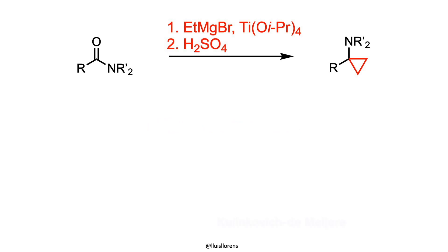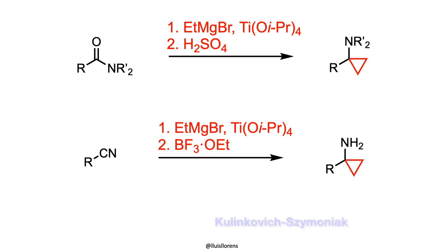The reaction between Grignard reagents with dialkylamides in the presence of stoichiometric amounts of titanium tetraisopropoxide allows the preparation of cyclopropylamines. If nitriles are used instead, primary cyclopropylamines may be generated.